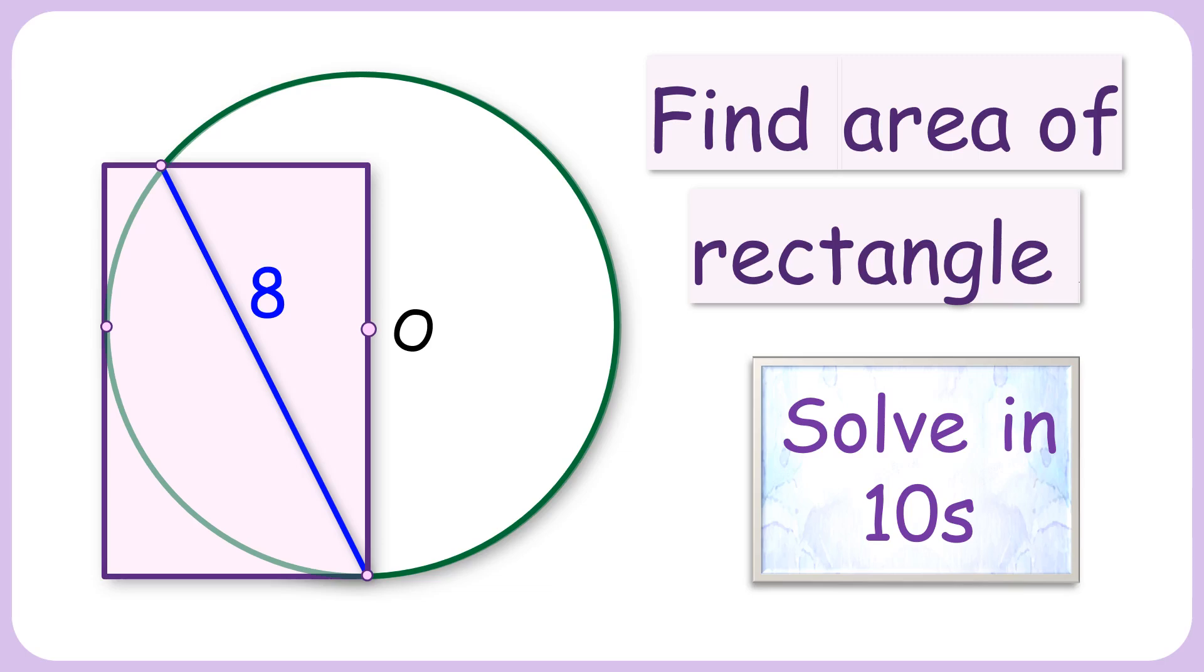In this interesting question, given is a circle and a rectangle. The sides of the rectangle are tangent to the circle at these two points. Also, the side of rectangle is passing through the center of the circle. The length of this blue chord is 8 cm. With this limited data, we have to find the area of the rectangle.